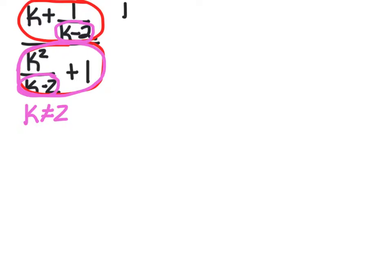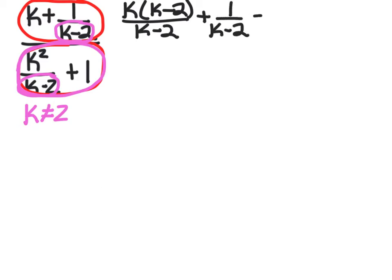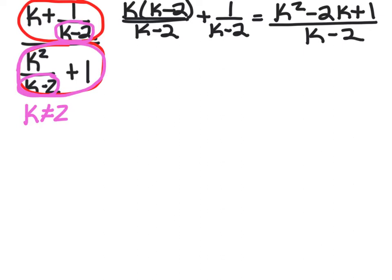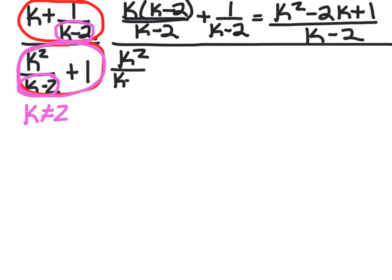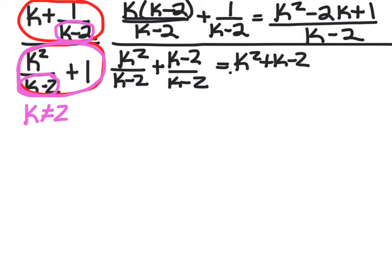To simplify the numerator, we multiply k by k minus 2 over k minus 2, and 1 over k minus 2, so that we have a common denominator. Distributing k gives us k squared minus 2k plus 1, all over k minus 2. For the denominator, we multiply 1 by k minus 2 over k minus 2 to get a common denominator, giving us k squared plus k minus 2, all over k minus 2.